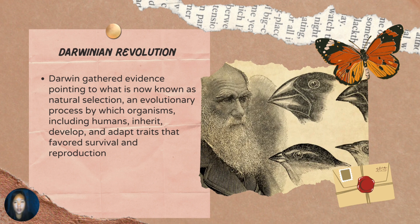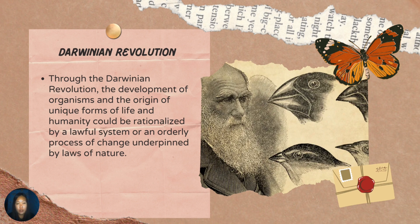Critics accused the theory of being either insufficient in accounting for the broad and complex evolutionary process, or dismissive of the idea that the functional design of organisms was a manifestation of an omniscient God. The Darwinian Revolution can be likened to the Copernican Revolution in its demonstration of the power of the laws of nature in explaining biological phenomena of survival and reproduction. Through the Darwinian Revolution, the development of organisms and the origin of unique forms of life and humanity could be rationalized by an orderly process of change undertaken by laws of nature.